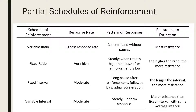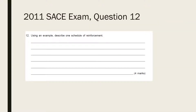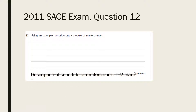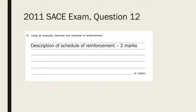Let's conclude by applying this theory to a couple of past exam questions. This question is a straightforward knowledge and understanding question and you could describe a continuous schedule or any of the four partial reinforcement schedules. For whichever schedule you choose to describe, two marks are for your description of the schedule of reinforcement and the other two marks are for your example scenario, illustrating that schedule being used.